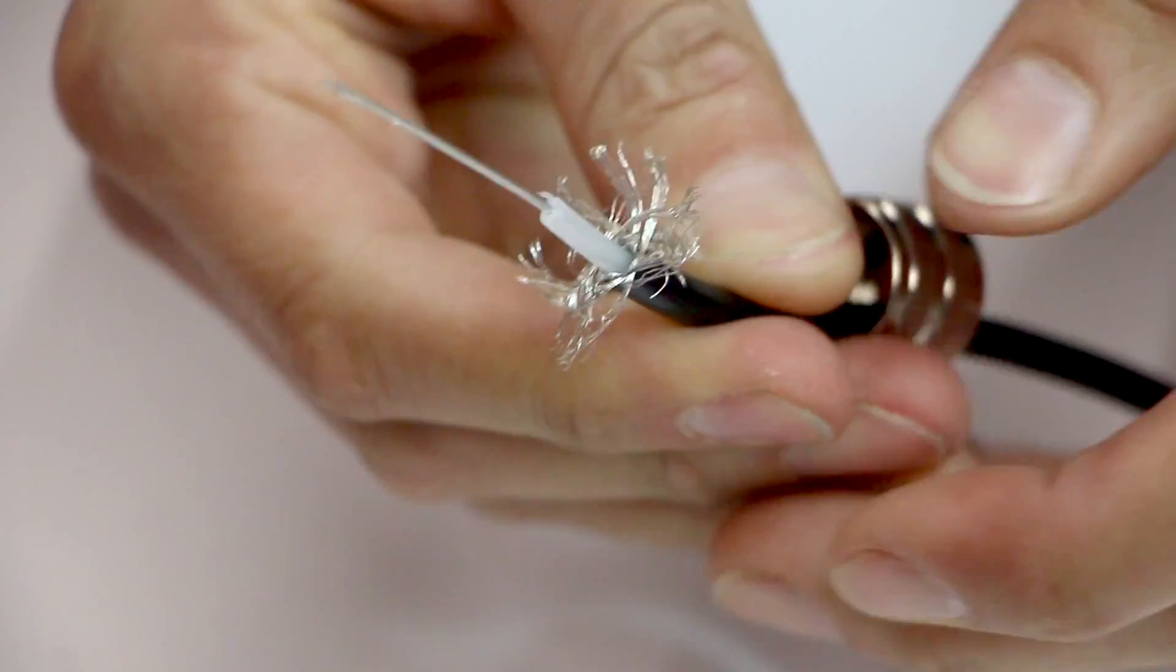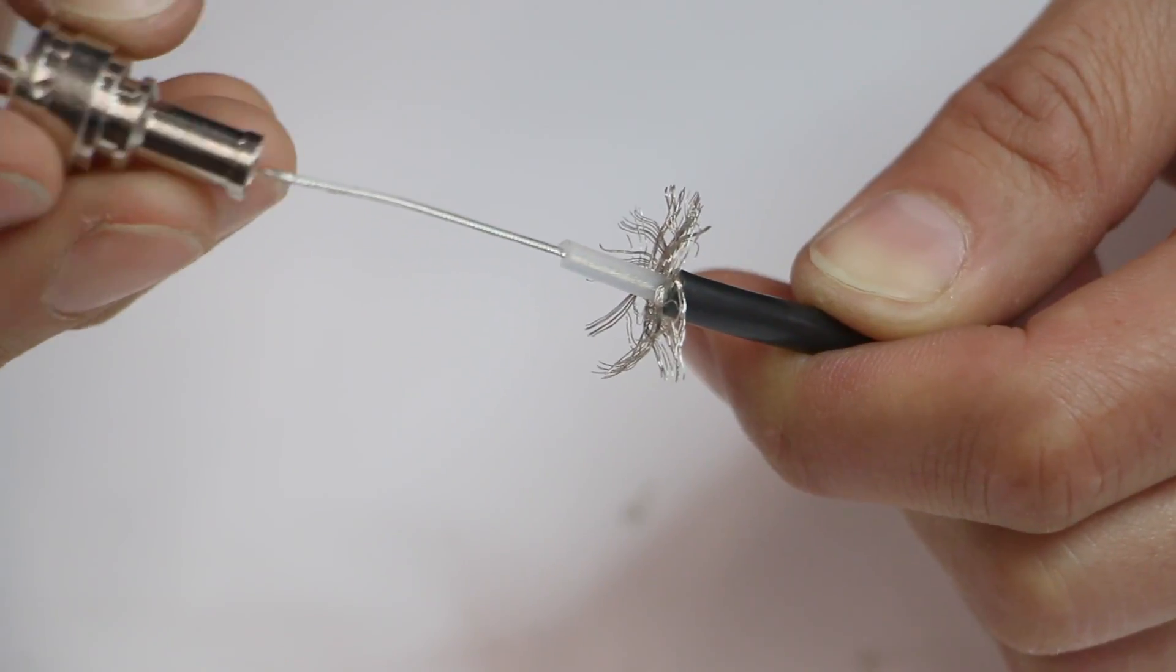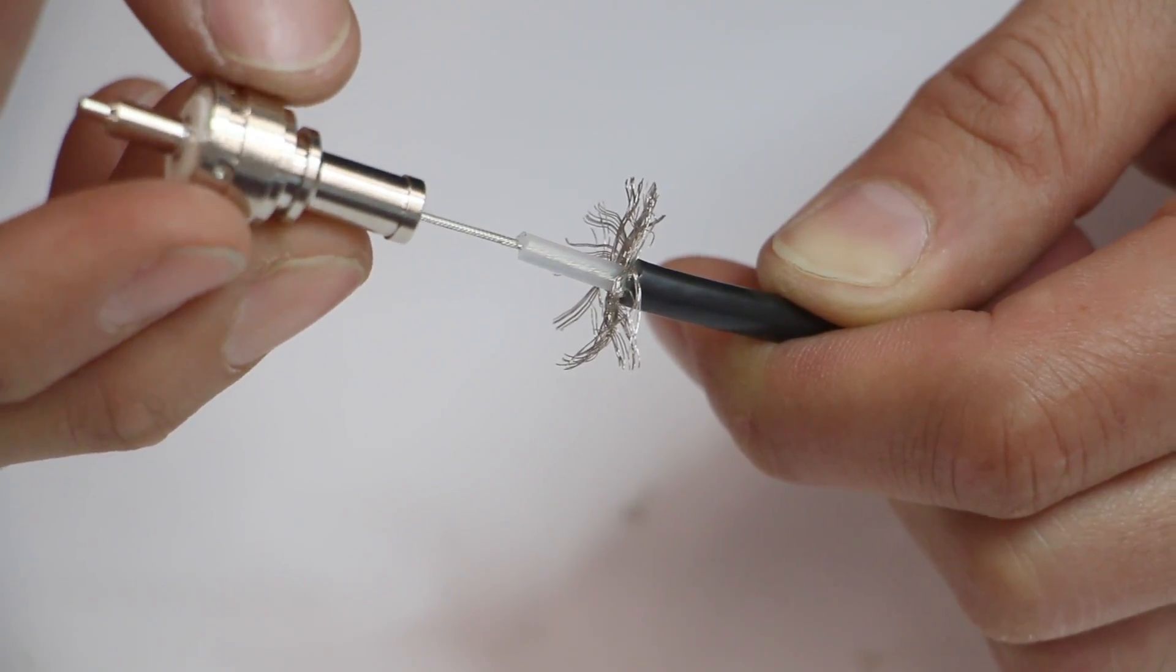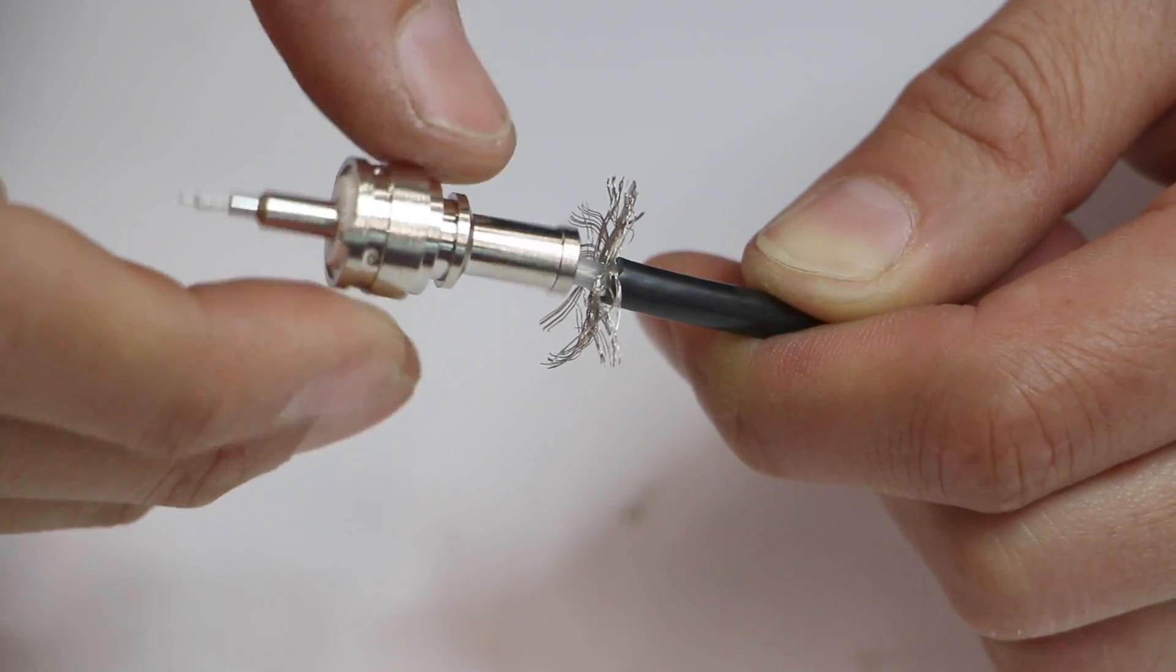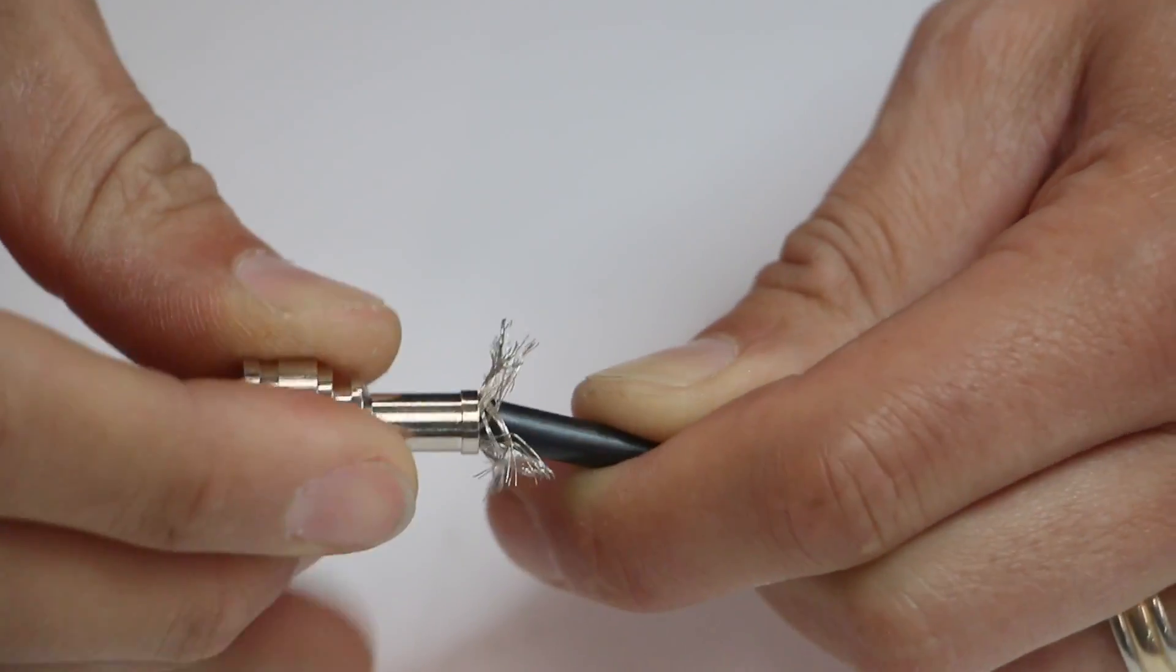Now slide the UHF connector over the coax cable, being sure to get a tight fit. Although it's not threaded, a few twists will help work the connector down over the cable.